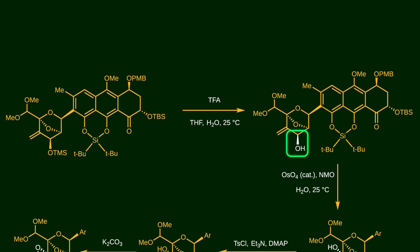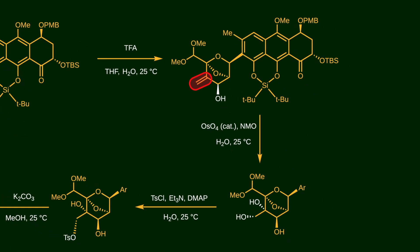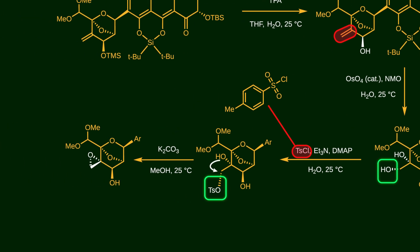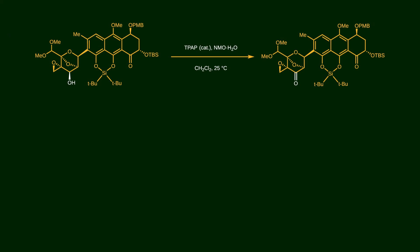Now, the allylic alcohol is created by deprotection with TFA. After that, the epoxide ring is introduced into the system. Nicolaou's group tried different approaches for direct epoxidation but they didn't work, so instead they installed the epoxide ring in three steps. First, treatment with osmium tetroxide leads to the cis-diol. Next, the primary alcohol is selectively tosylated because of its lower steric hindrance, converting it into a good leaving group. Finally, potassium carbonate deprotonates the secondary alcohol, which then attacks the adjacent carbon atom to furnish the epoxide. After introducing the epoxide ring, the alcohol is oxidized to the ketone by Ley-Griffith oxidation.